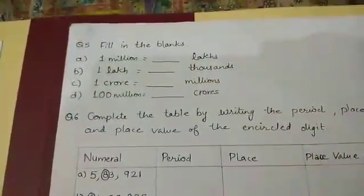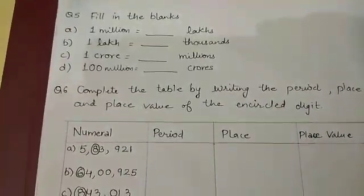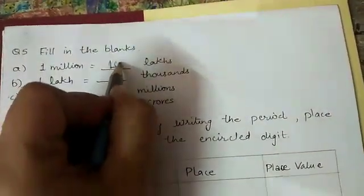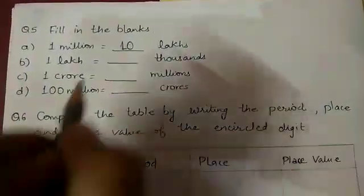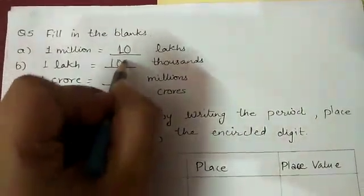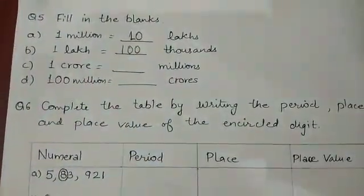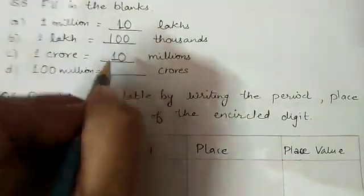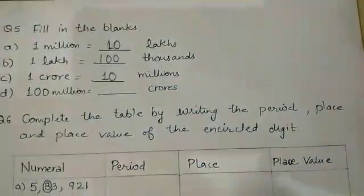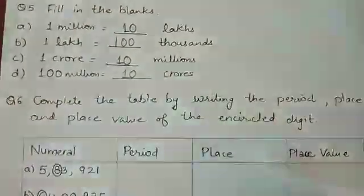Fill in the blanks. 1,000,000 is equal to 10 lakhs. 1 lakh equals 100 thousands. 1 crore equals 10,000,000 and 100,000,000 are equal to 10 crores.